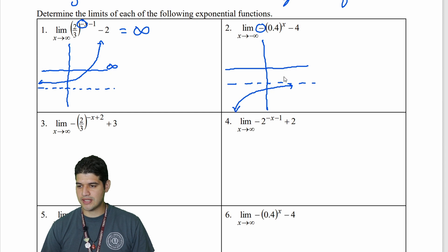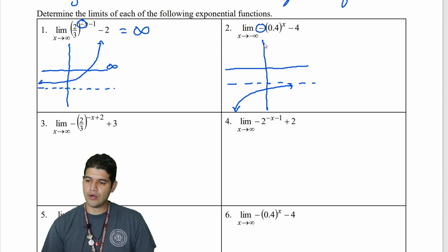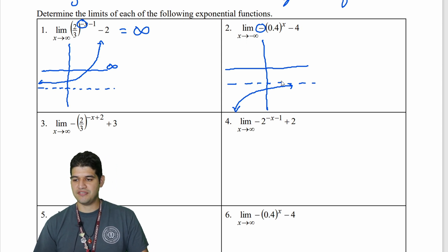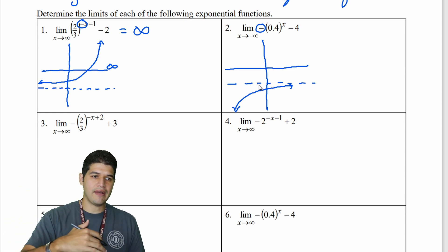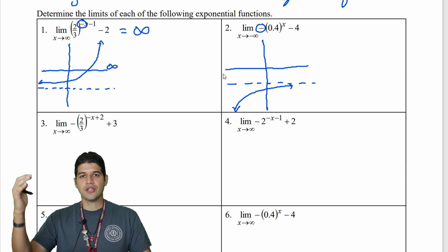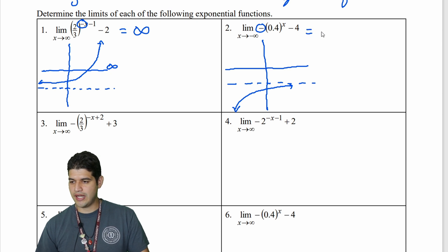But since I do have that vertical reflection, it's going to reflect over the horizontal asymptote, so all the values flip to the other side. Before it was coming down, but now it's going up to the horizontal asymptote. Now I read the question — x approaches negative infinity. Following this graph to the left, the y values are going down to negative infinity.